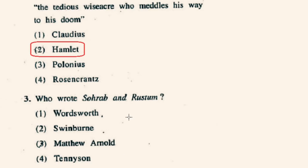Question number 3: Who wrote Sohrab and Rustam? Sohrab and Rustam is a narrative poem with strong tragic themes, first published in 1853 by Matthew Arnold. So here option 3rd, Matthew Arnold, will be correct.